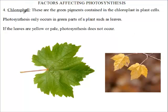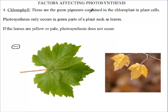The fourth and final factor that affects photosynthesis is chlorophyll. When you take the plant cell, there's an organelle called the chloroplast. This chloroplast contains the green pigments called chlorophyll. So the chloroplast is the organelle in the plant cell.